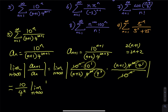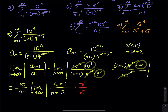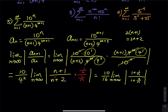Then the limit as n approaches infinity: the top will be n+1 and the denominator will be n+2. The highest power is 1, so we divide each term by n. That gives us 10 divided by 16, times the limit as n approaches infinity of 1 plus 1/n divided by 1 plus 2/n. As n approaches infinity all the fractions become zero.